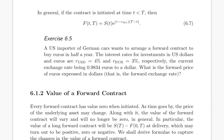In general, if the contract is initiated at time t rather than 0, then F(t,T) = S(t) · e^((r − r_div)(T − t)). Thank you for listening.